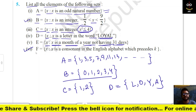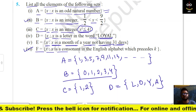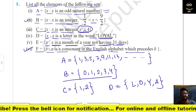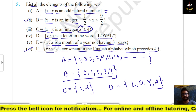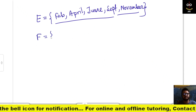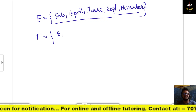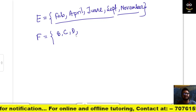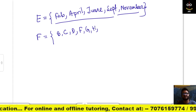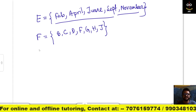F = {x : x is a consonant in the English alphabet which precedes K}. The consonants before K are: b, c, d, f, g, h, and j. This is the set.